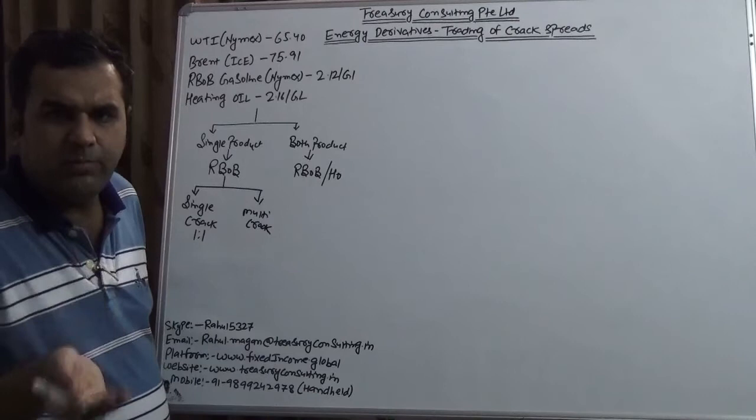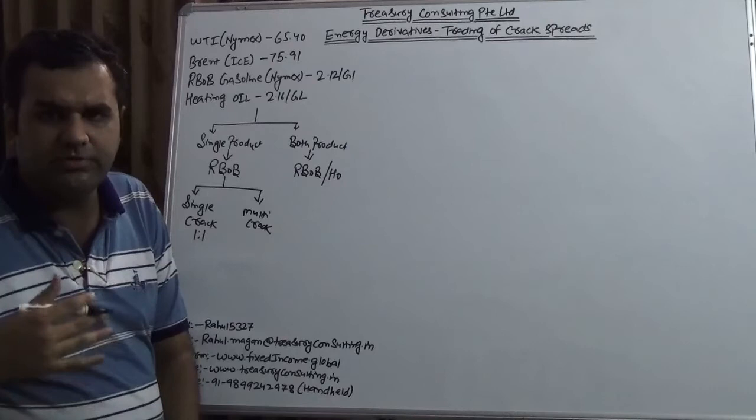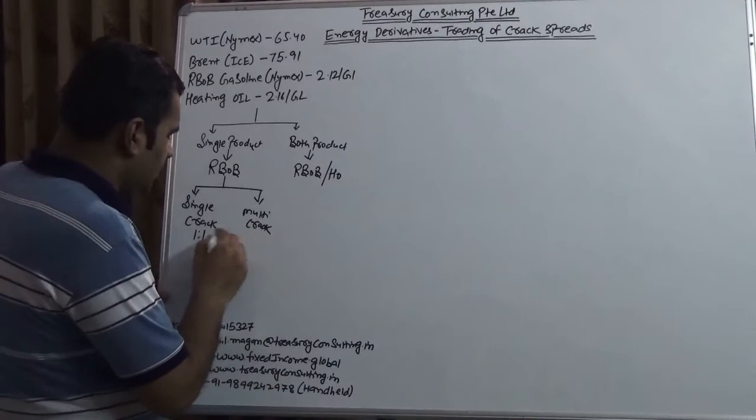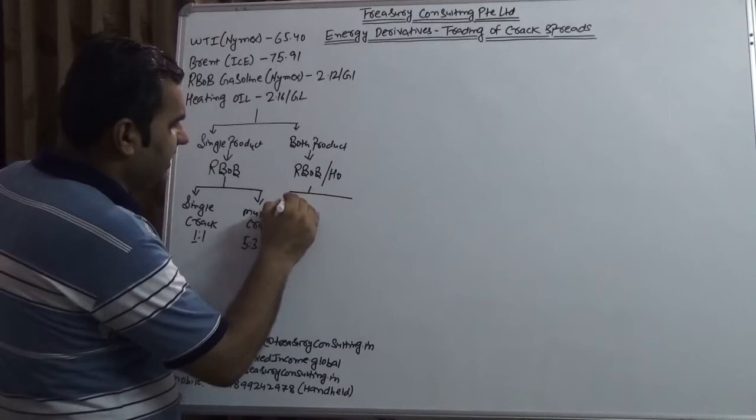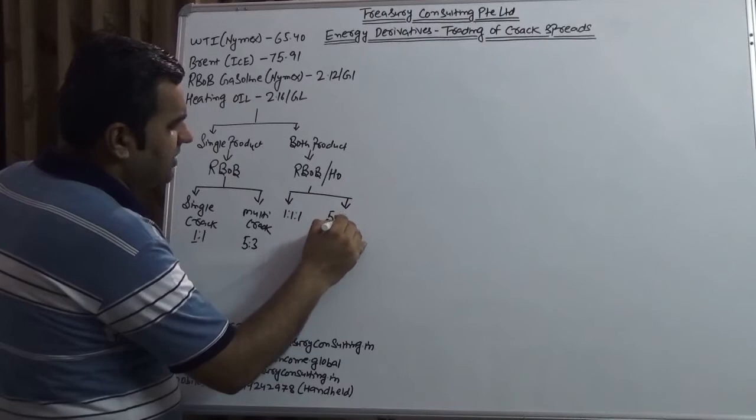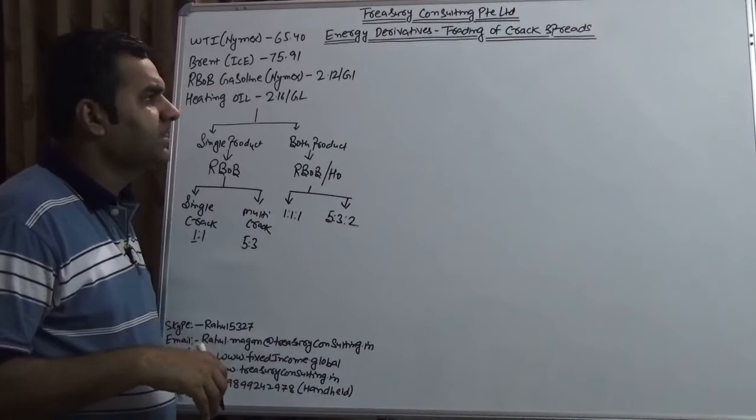Single crack is one-to-one, which means that for one barrel of oil you are importing, you produce 42 gallons of gasoline and that you are selling — it is one-to-one. So one future of crude oil and one future of gasoline — that is what you are doing. In multi crack, it could be five-to-three. The situation is a little tough; it could be one-to-one-to-one. Generally, the ratio is five-to-three-to-two, and sometimes it changes as companies keep switching.